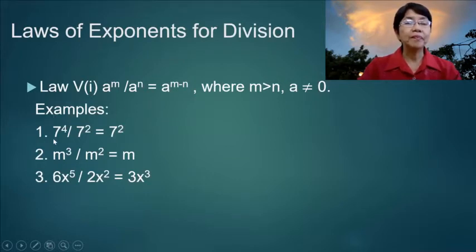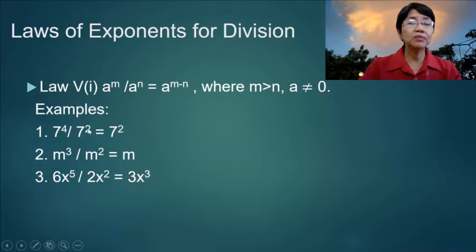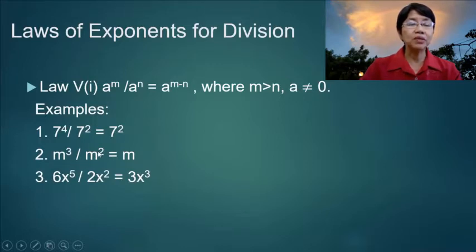Example: 7 to the fourth over 7 squared equals 7 to the fourth minus 2, or 7 squared. Number 2: m cubed over m squared — you subtract 3 minus 2, so you get m to the first power, or simply m.